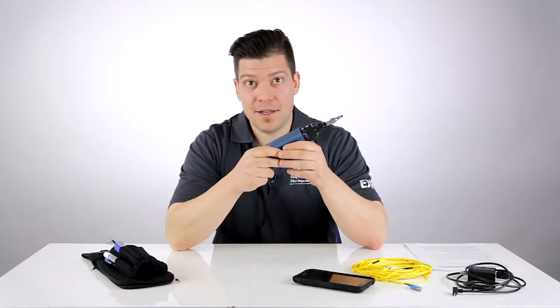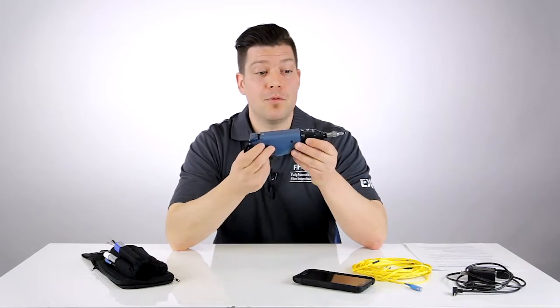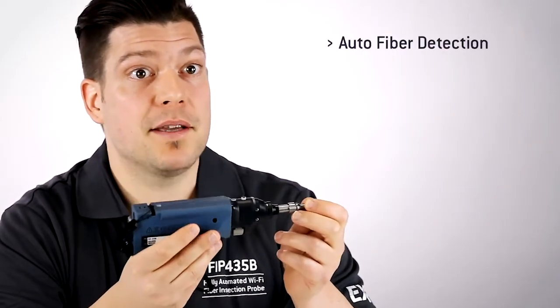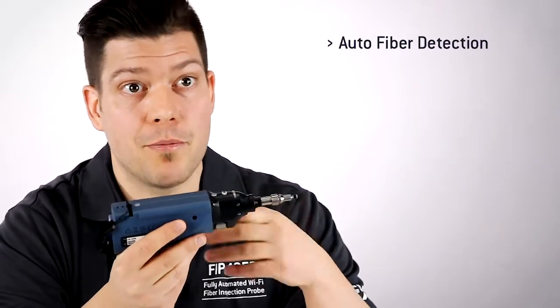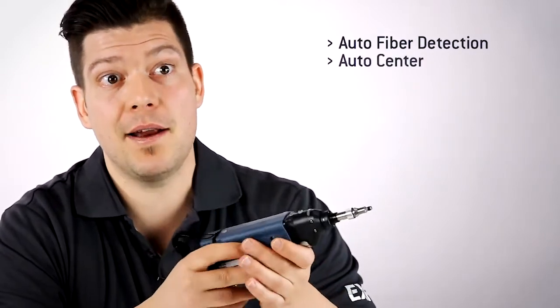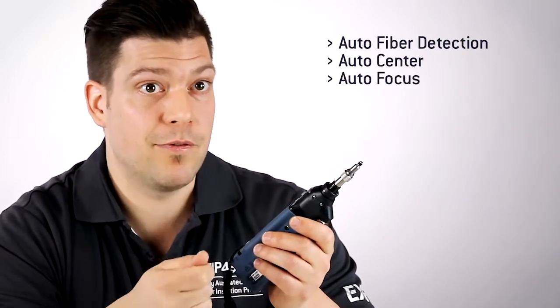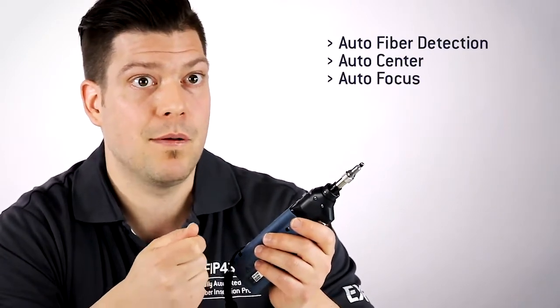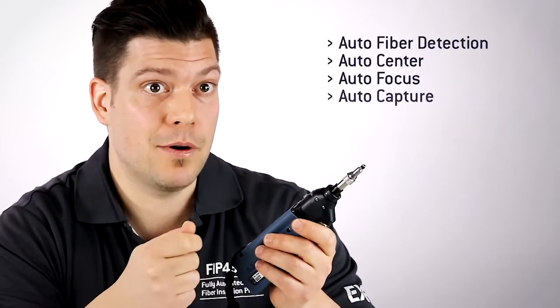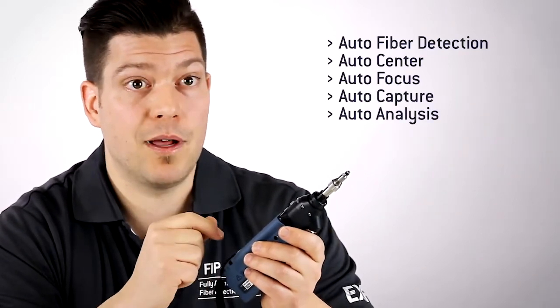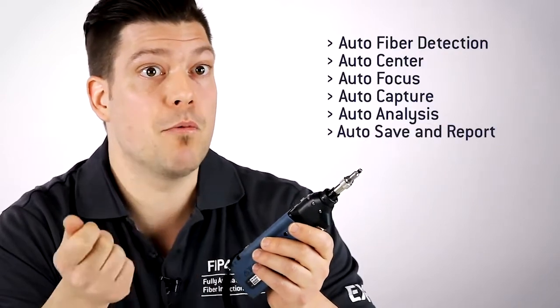What we mean by fully automated test process is that the user simply has to connect the tip of the probe into the connector and the probe will recognize there's a fiber inserted and trigger the process to start. It will find and center the fiber image, adjust and optimize the focus to the best level possible, capture the image, run the analysis, provide you with a pass-fail result, and save and report automatically.